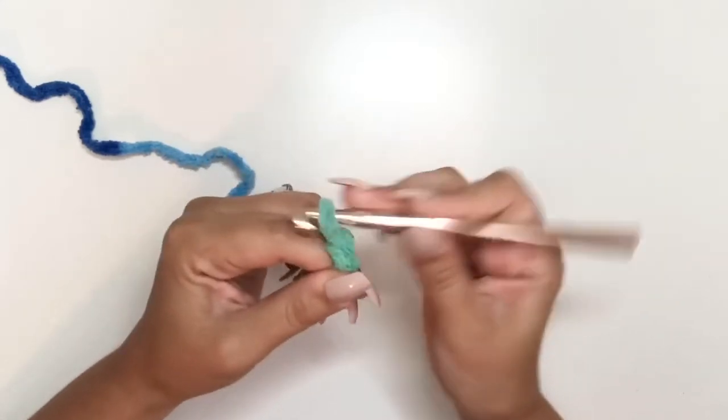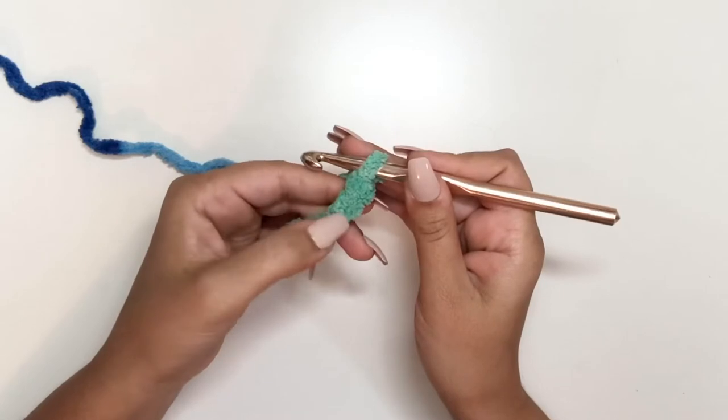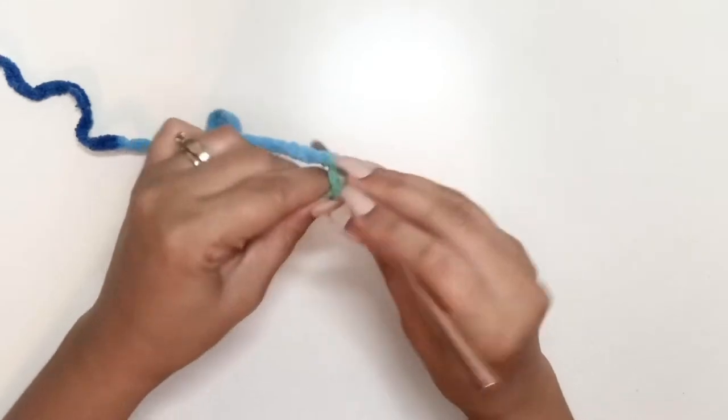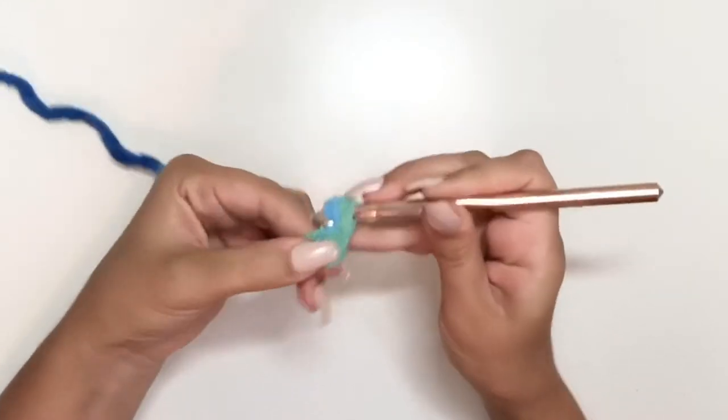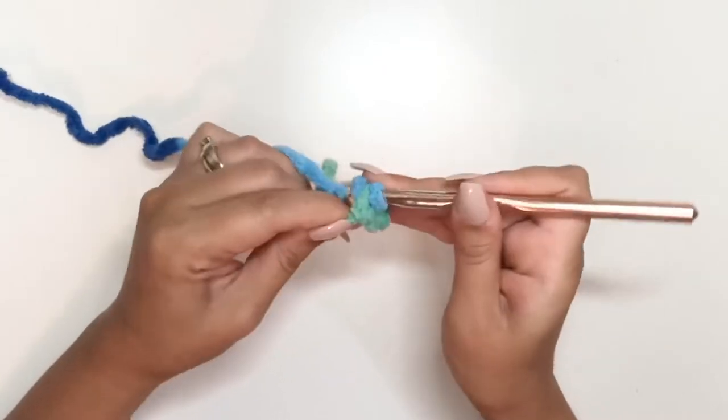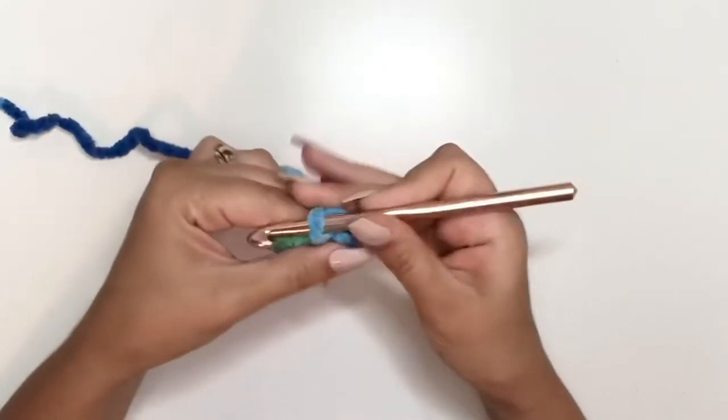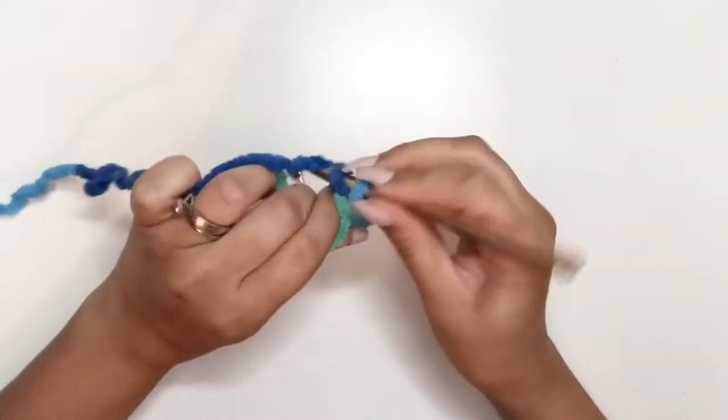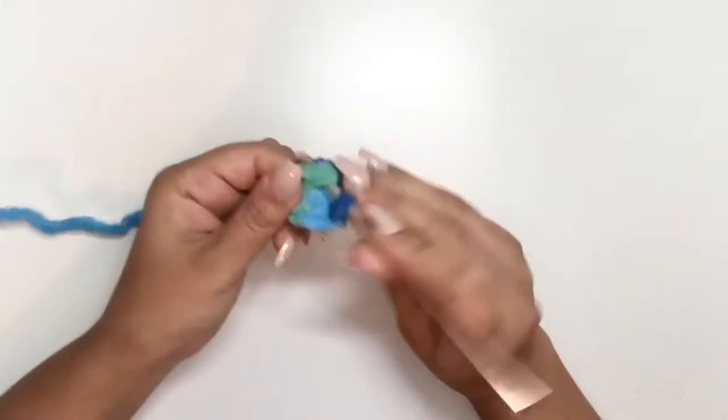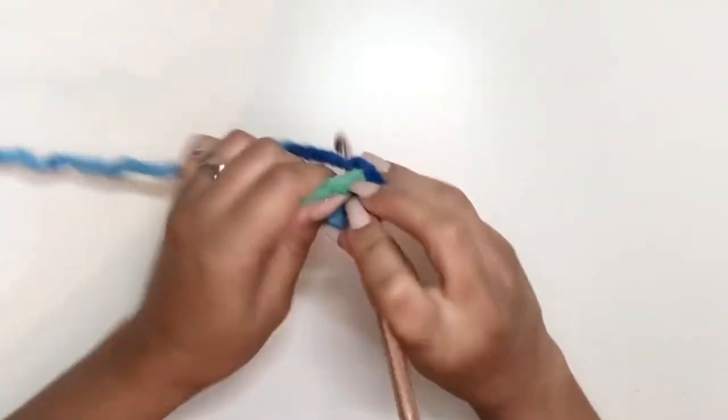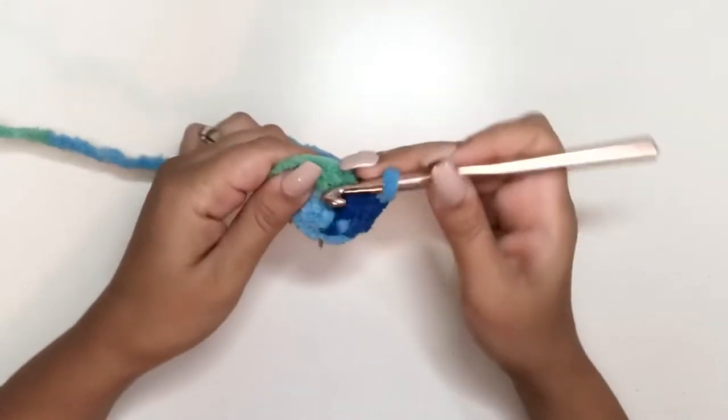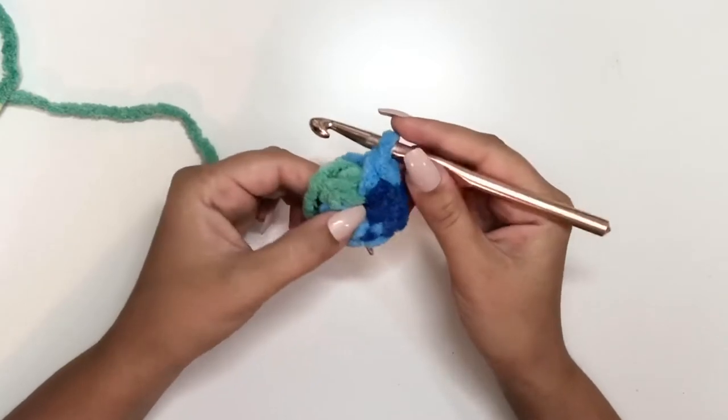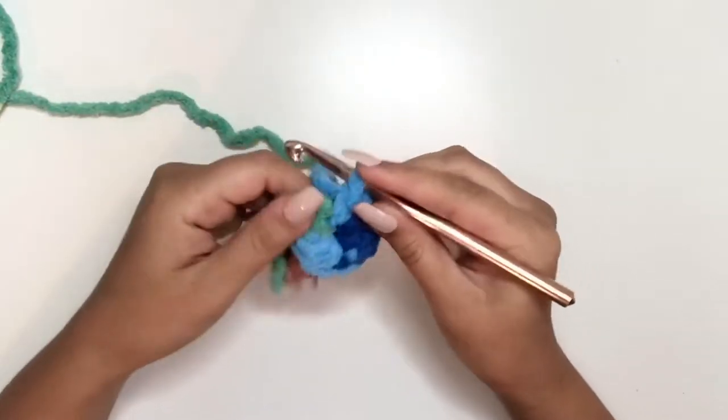After you've done that, you're going to chain two: one, two. Then we're going to work seven single crochets into our first chain. One, two, three, four, five, six, seven. After you've done your seven single crochets, you're going to take this short end and pull your loop tight to close that circle in the middle.